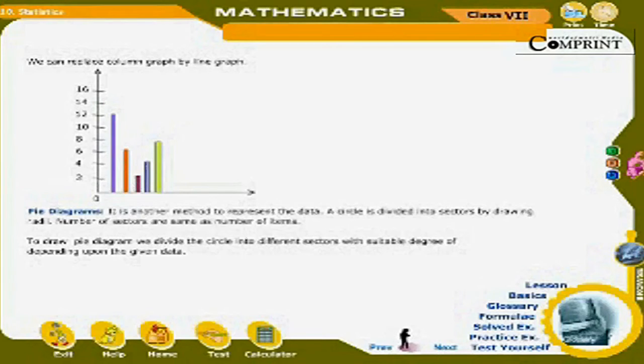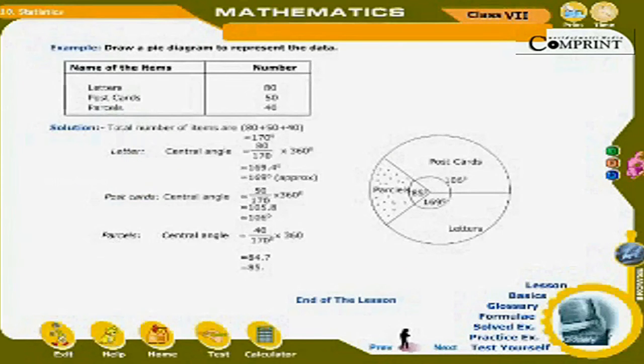To draw a pi diagram, we divide the circle into different sectors with suitable degree of angle depending upon the given data. For example, draw a pi diagram to represent the data.